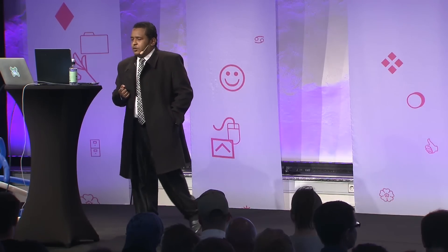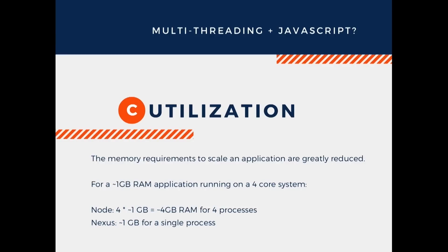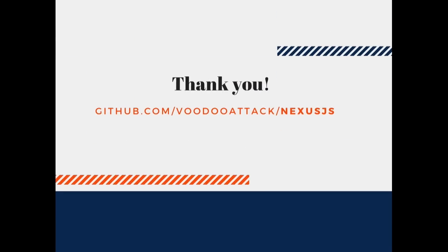The next thing is memory utilization. To scale your application — let's say you have a process that takes one gigabyte of RAM. To scale it using Node, you will have to start four processes, giving you four gigabytes of RAM. With Nexus, you only need to start one process. Thank you.